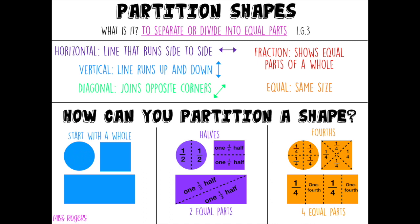So remember, today we practiced partitioning shapes into halves and fourths. Remember, halves are when we partition shapes into two equal parts, and fourths are when we partition shapes into four equal parts. I have a challenge for you: next time you're eating a sandwich, hamburger, pizza, or candy bar, think about ways that you could possibly partition those foods into halves or fourths. See you soon, rock stars!